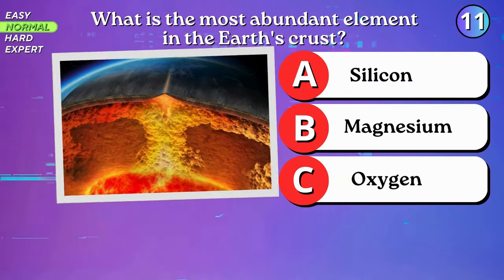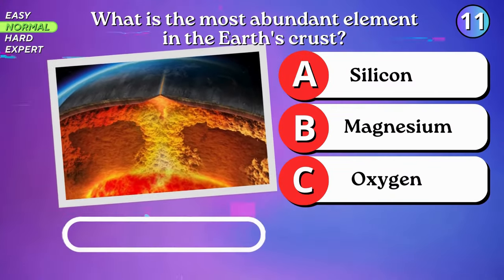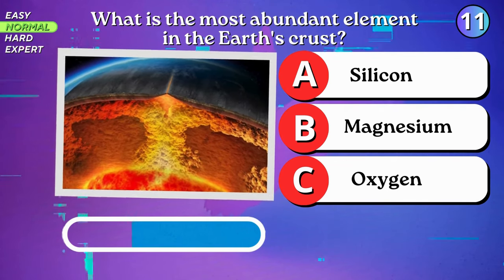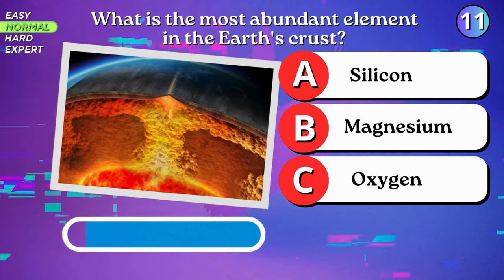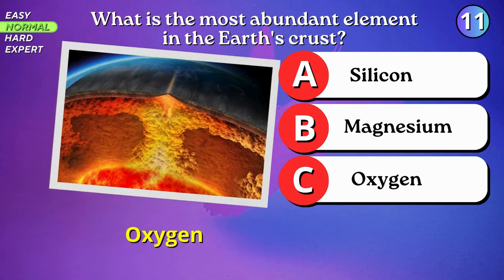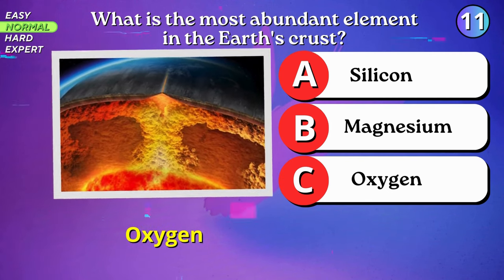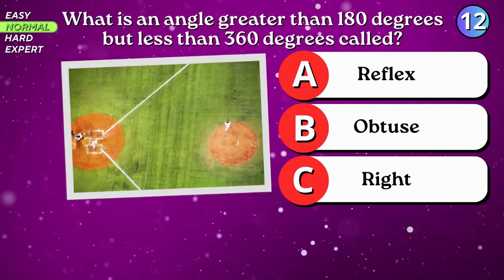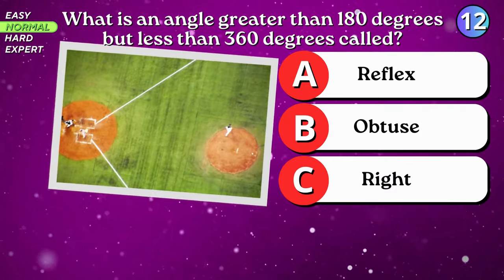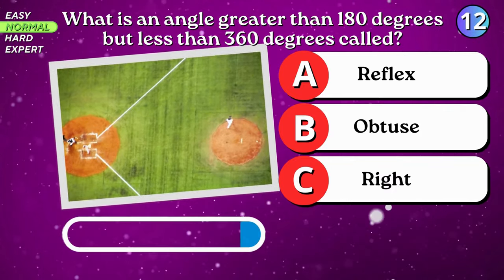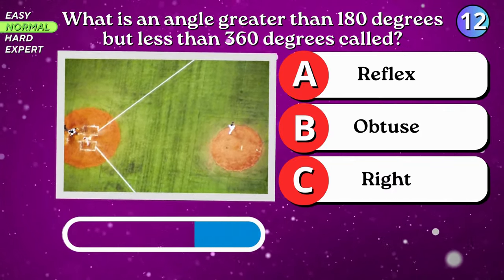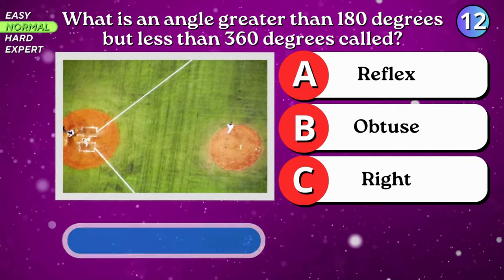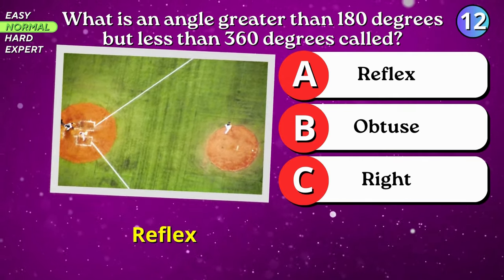What is the most abundant element in the Earth's crust? Oxygen. What is an angle greater than 180 degrees but less than 360 degrees called? Reflex.